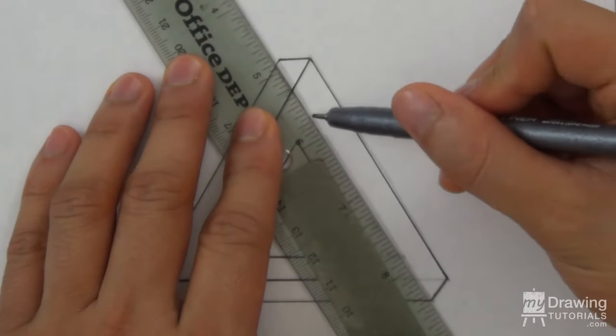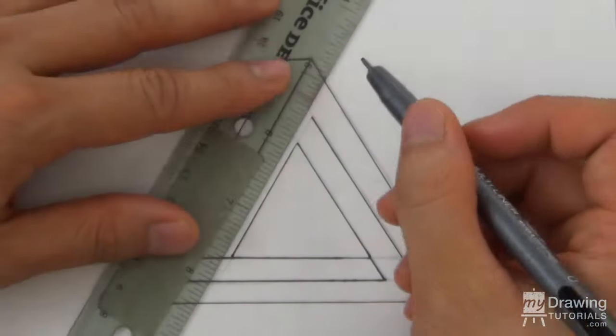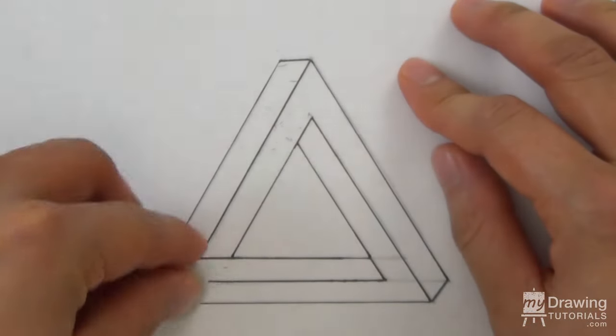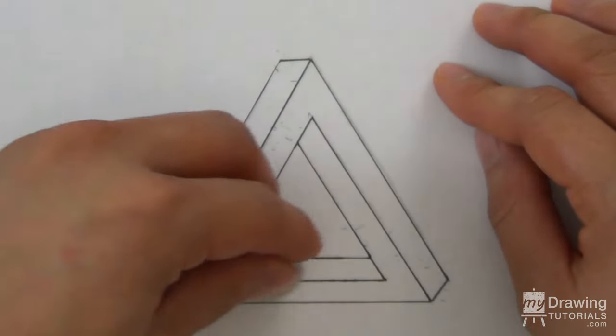And lastly, we'll do the same for the third corner. Now let's just wait a minute for the ink to dry, and then erase the pencil lines to reveal our impossible triangle.